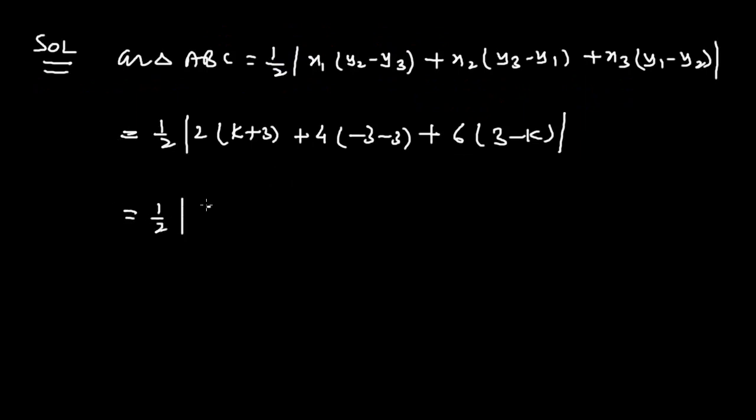The absolute value of 2(K+6) - 24 + 18 - 6K, which becomes 1/2 times 2K - 6K...